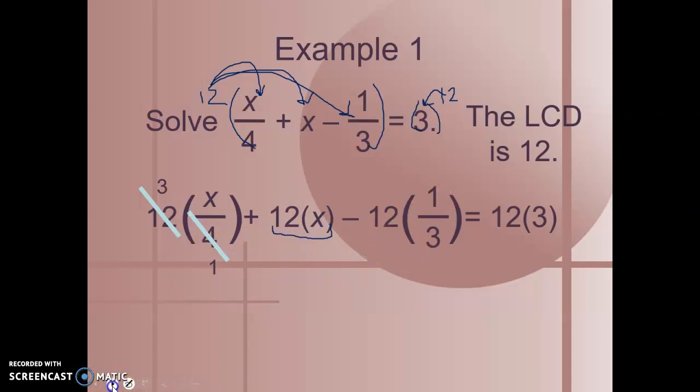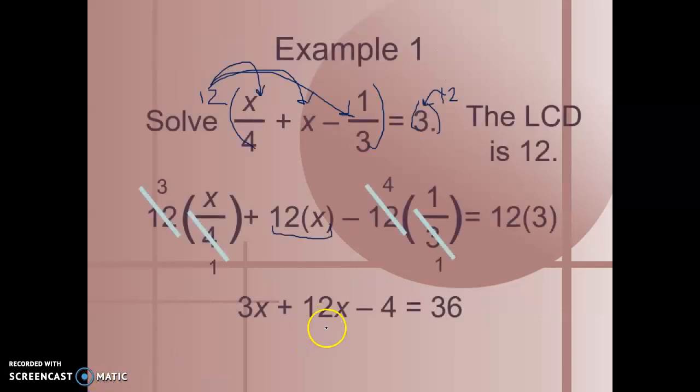And then we have 12 times 1 third. Well, 12 over 3 is just 4. So we're left with 3x plus 12x minus 4 equals 36. We're going to simplify each side, which gets us to 15x minus 4 equals 36. Add 4 to both sides. We get 15x equals 40. Divide both sides by 15, and that leaves us with x equals 40 over 15. We know that can be simplified because both numbers can be divided by 5. So we get 8 over 3. x equals 8 over 3.